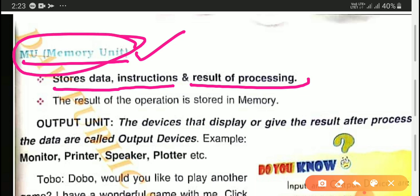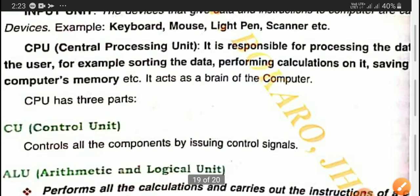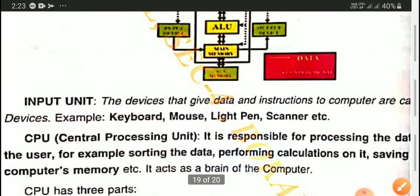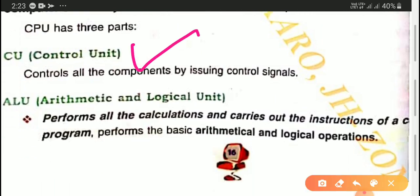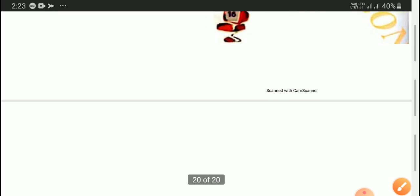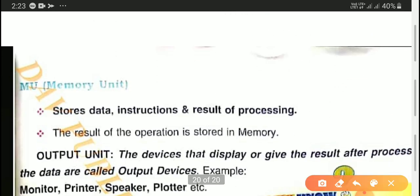So in this way, the CPU has three parts: the first is the control unit, the second is the arithmetic and logical unit, and the third is the memory unit.